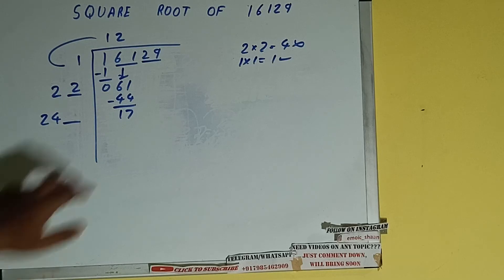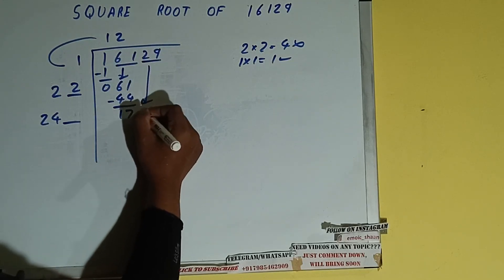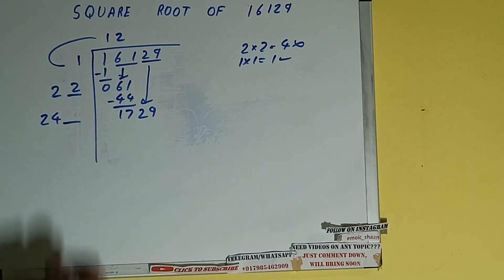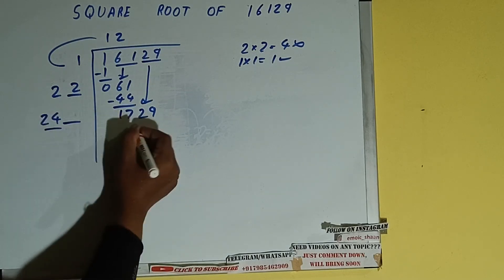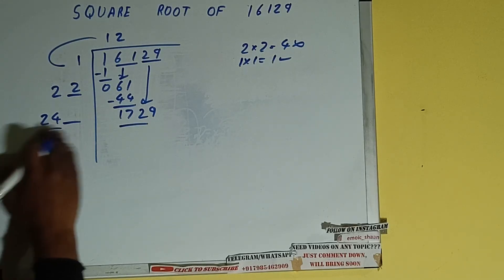Keep a digit extra and this number we need to make big. So bring the next pair down and it will be 1729. Now compare this 24 and 172. So 24 times 7 is 168, so we can try out 7.